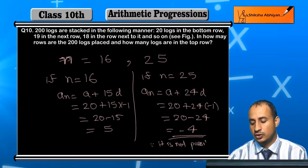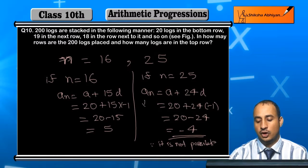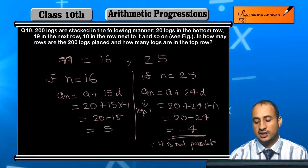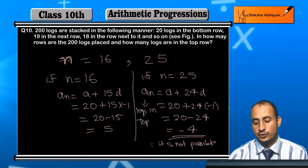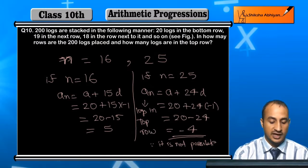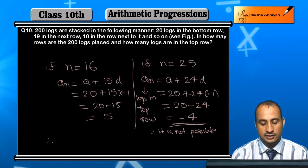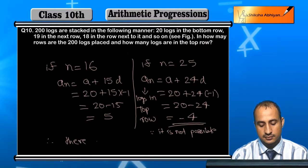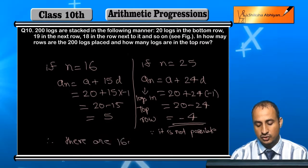That is not possible. It is not possible why? Because An represents locks in the top row, which cannot be negative. Therefore n equals 16 is rejected.